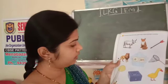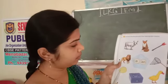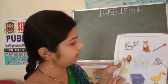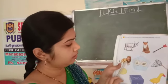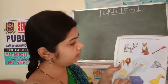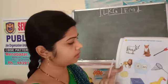An egg — it is vowel sound word. A lion — it is consonant. An ox — it is vowel sound word.